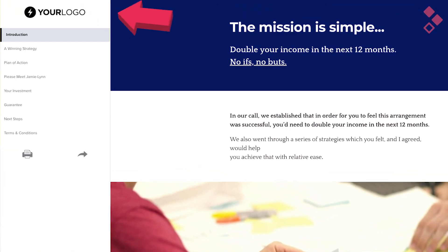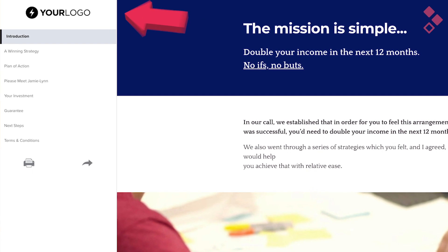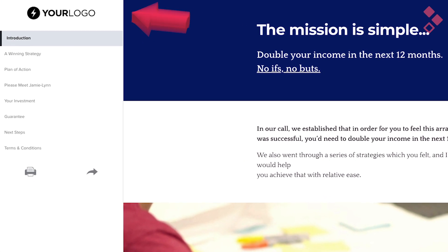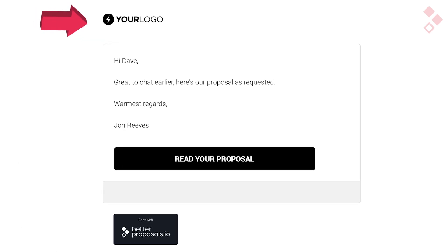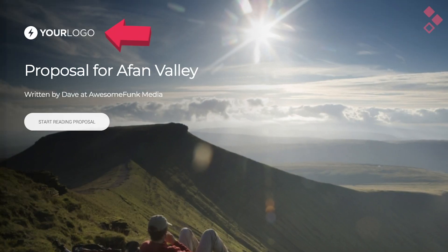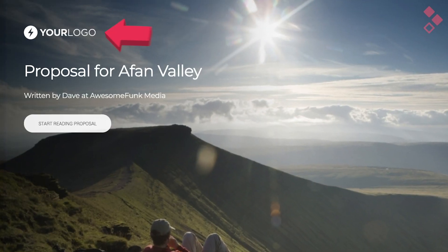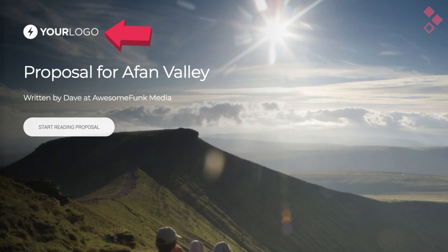The first thing you want to do is get your proposal branding sorted out, and by that I mean your logo in all of the right places. There are three places that your logo shows up: the first is on your proposal itself in the proposal viewer sidebar on the left-hand side, the second is on the emails that go to your client, and the last is on your proposal covers.